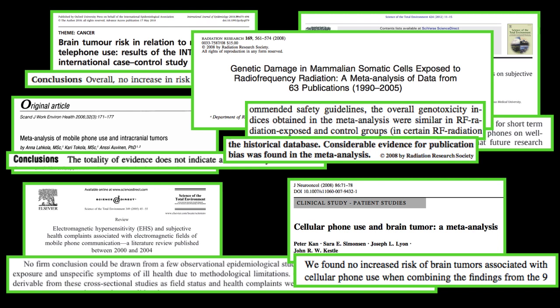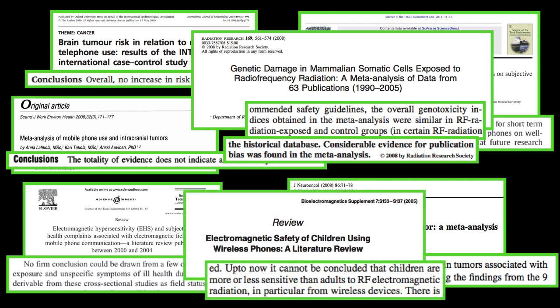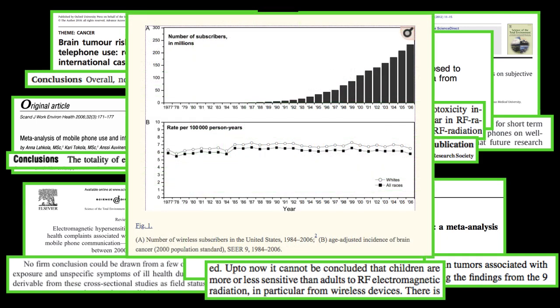Or this one that also found evidence of publication bias in favor of papers finding links, meaning the studies that did find negative effects, despite already being in the minority, are overrepresented in the literature. We also have this study looking at the effects on children. There are many more and I can't include them all, but if you're really concerned, I encourage you to search through the peer-reviewed literature yourself. Finally, here is data comparing cell phone use over time to the incidence of brain cancer.